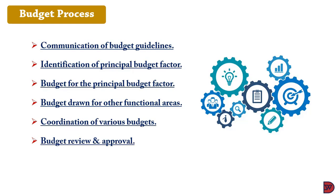The sixth stage is acceptance or approval of the budget. After the budget has been consolidated into the master budget, it is presented to senior managers to review and approve. Lastly, control: after the budget has been accepted and implemented, at the end of the period actual outcomes are compared to the budget, variances are identified, and remedied to prevent future occurrence.